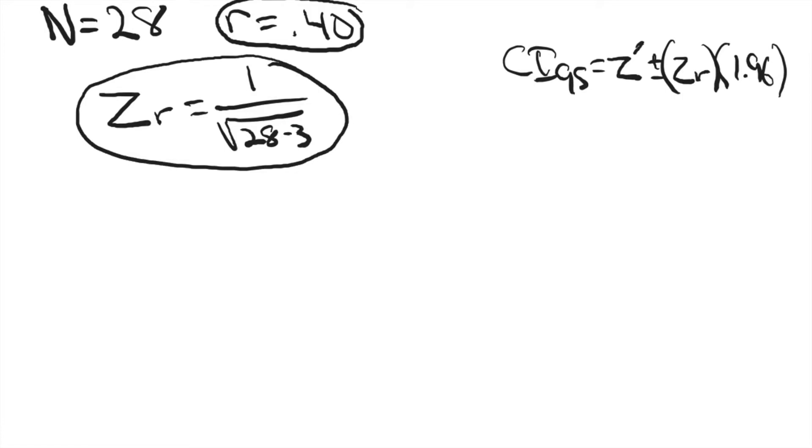I picked a sample size of 28 so that we'd get a nice, easy to square root number. 28 minus 3 is 25, square root of 25 is 5. So Zr equals 1 divided by 5 equals 0.20. That is our standard error.